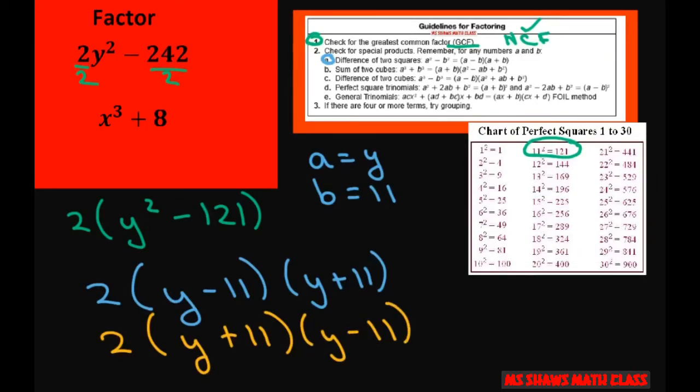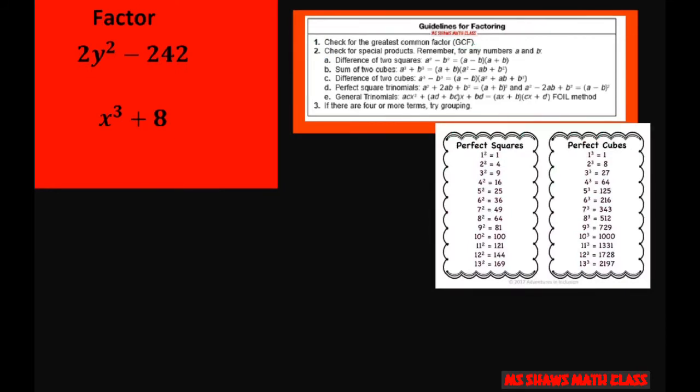Now the second one, this is not a perfect square but it is a perfect cube right here. So I'm going to use the sum of two cubes. This is cube 2 because you can take the cube root of x and get x. In this case my a is x and my b is 2 because 2 cubed is 8.